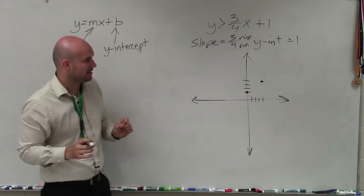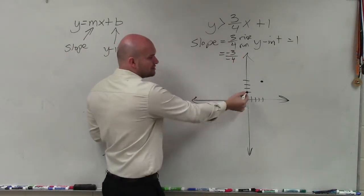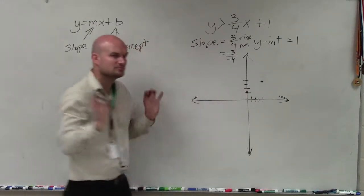Before I go ahead and graph my line, also understand that negative 3 over negative 4 is equivalent to 3 over 4. So I could have gone down 3, left 4. Just FYI.